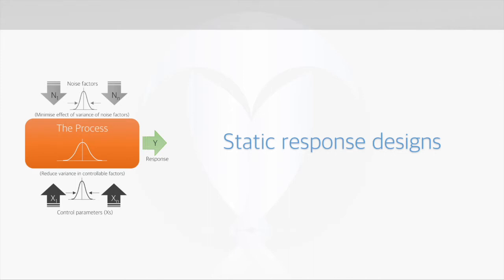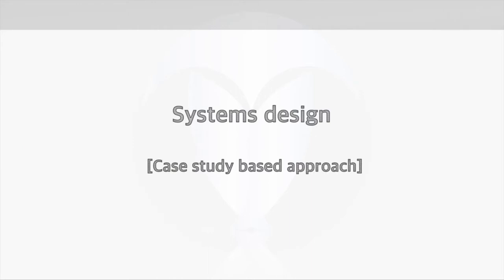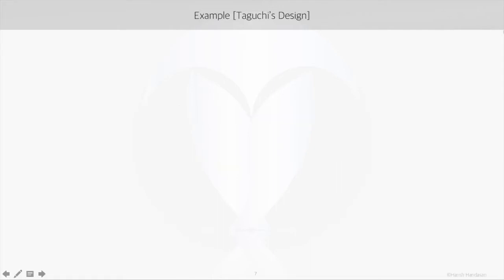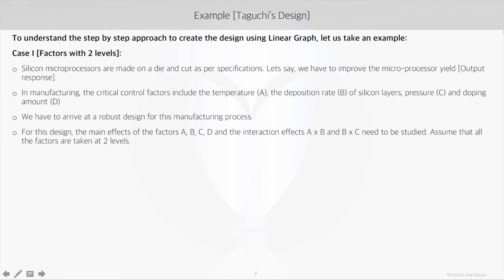To understand the step-by-step approach to creating the experimental design using orthogonal arrays and linear graphs, let's go through a case. In the first case, we need to improve the microprocessor yield — the output response — in a process where silicon microprocessors are being manufactured. The control factors considered are: temperature (factor A), deposition rate of silicon layers (factor B), pressure (factor C), and doping amount (factor D). We assume all these factors are at two levels.